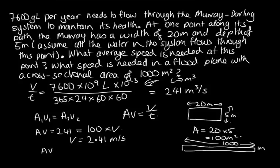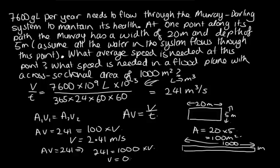The cross-sectional area times the speed is equal to 241. But in this case A is 1,000, so we've got 241 equals 1,000 times V, and the speed equals 0.241 metres per second — much slower flowing. Which is why rivers slow down when they come to a flood plain.